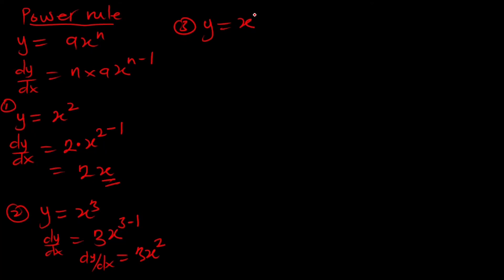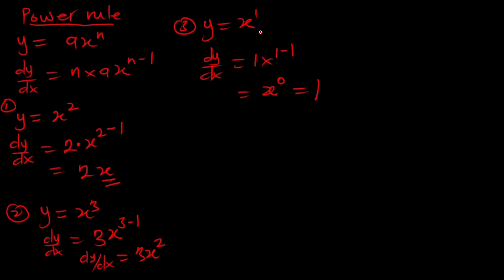Let's look at the third example: what is the derivative of x? Remember, it's just x raised to the power one. So dy/dx equals 1 times x raised to the power zero. Any number raised to the power zero is one, therefore the derivative of x is one using the power rule.